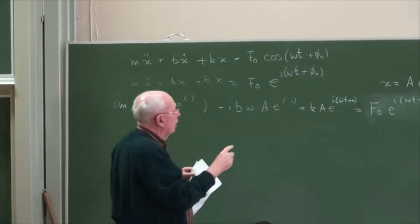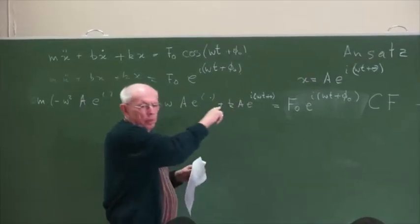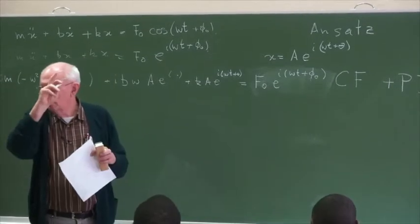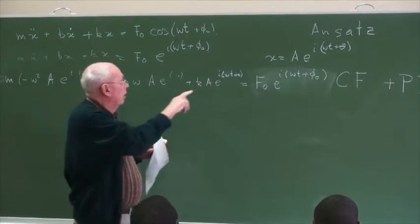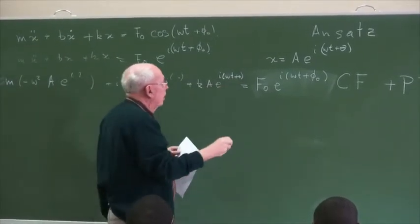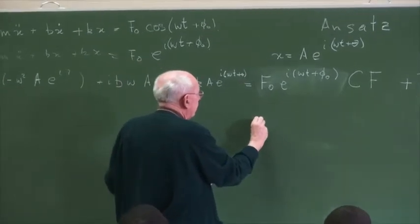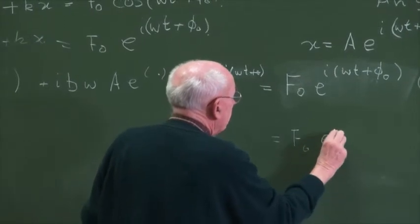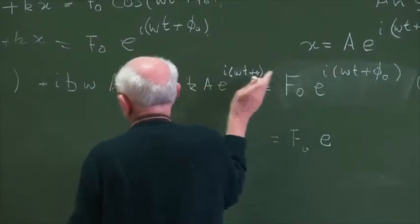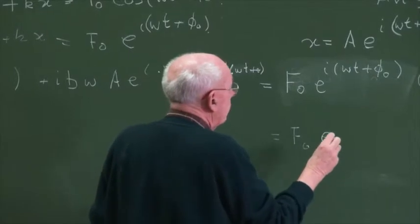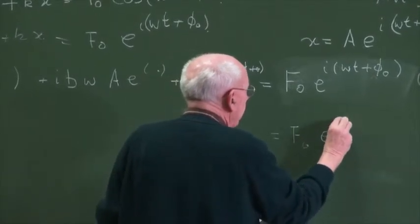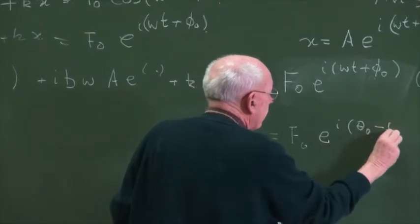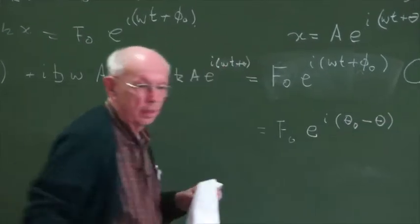We can divide through by e^{i(ωt + θ)}, cancelling the exponential, and we get F zero equals A times the bracket (k − mω²) plus i·b·ω, with a phase factor e^{i(θ₀ − θ)}. I'll call this phase difference φ — it's the difference of two phases, the initial phase and the response phase.